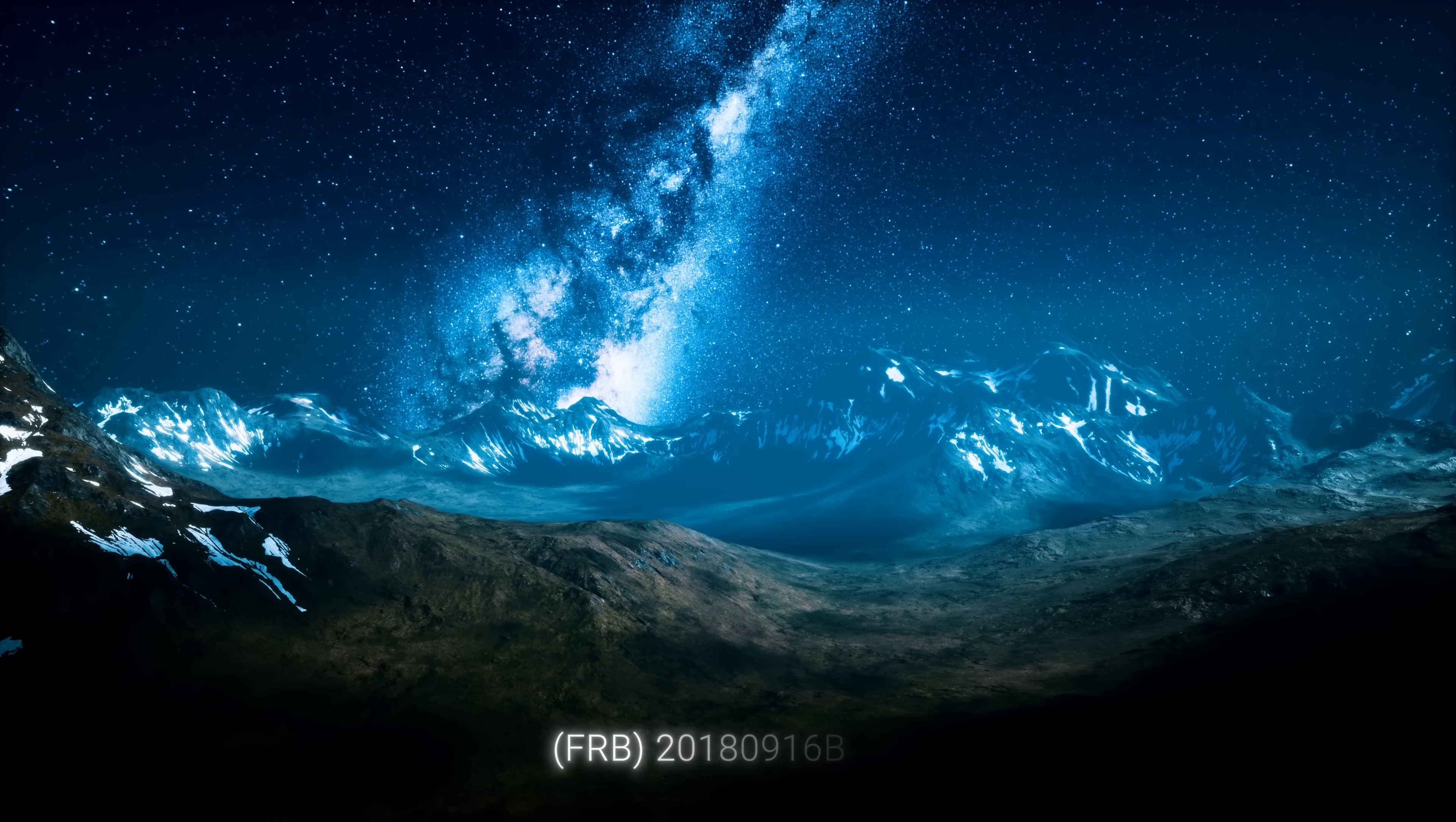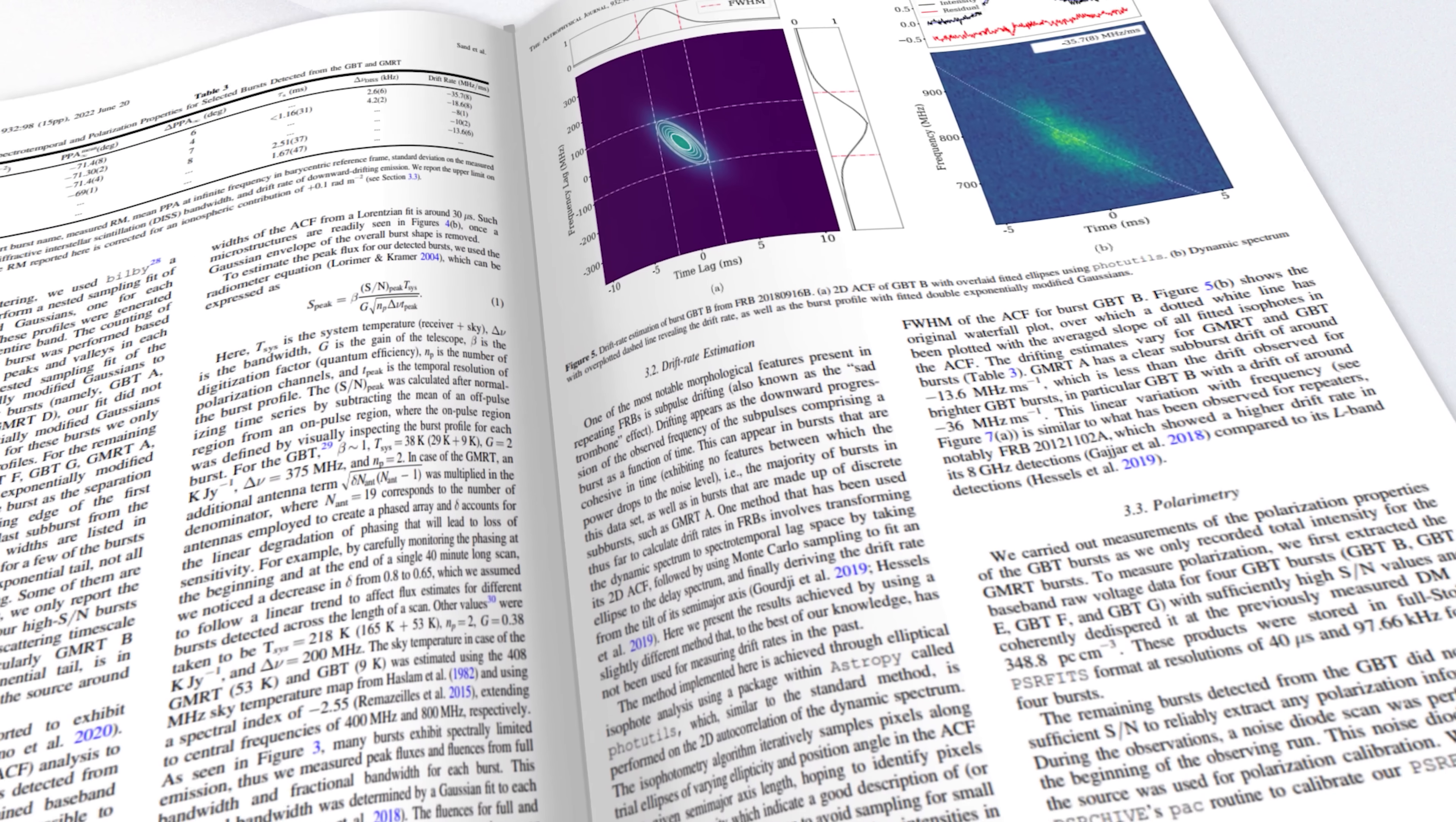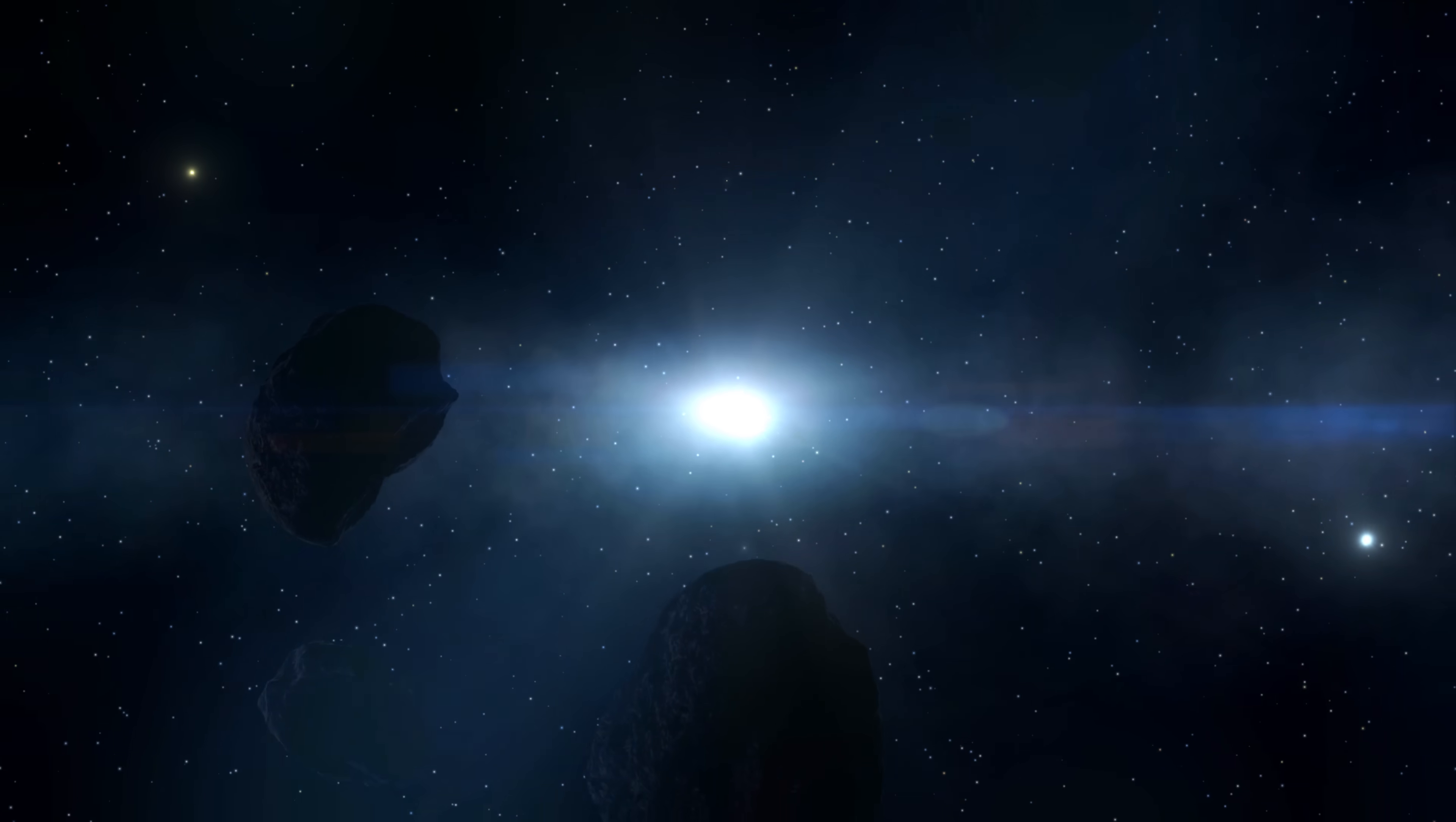Interestingly, the results of Fast Radio Burst 201809-16b offer some parallels. This particular FRB exhibited patterns that were puzzling at first, but were later found to be influenced by the local environment, including the presence of a nearby magnetar and the surrounding cosmic plasma. Could a similar environmental influence occur with GPM J1839-10?